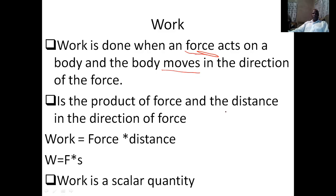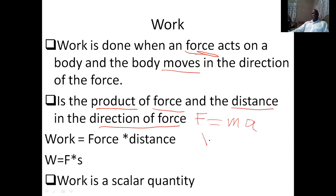Work is actually the product — meaning you have to multiply the force and the distance — and this should be in the direction of the force. So work is equal to force multiplied by the displacement, which is the distance moved. At times, where it is force, you can put mass times acceleration.